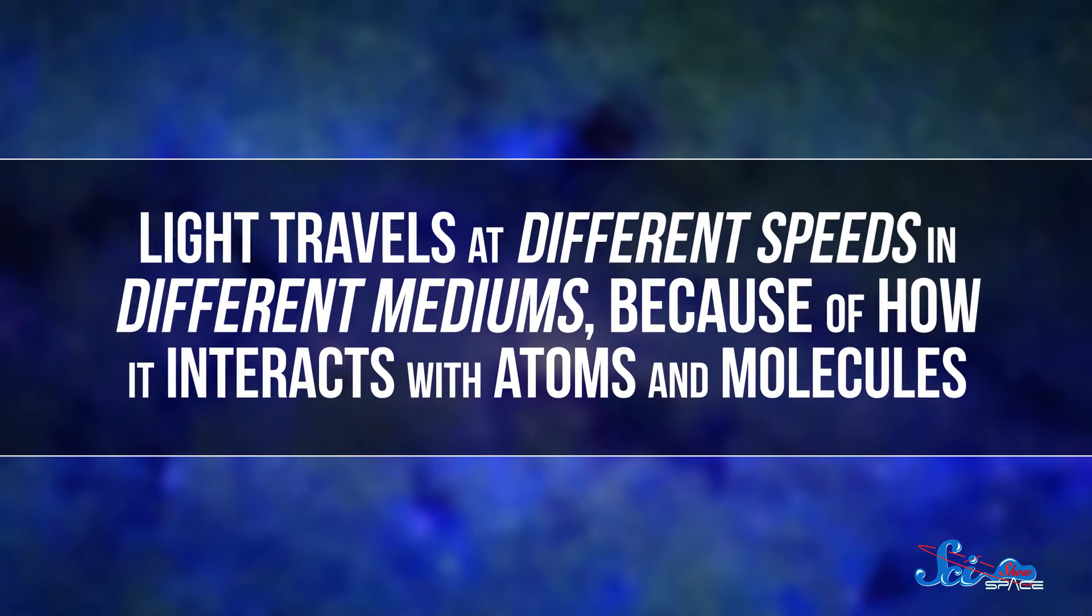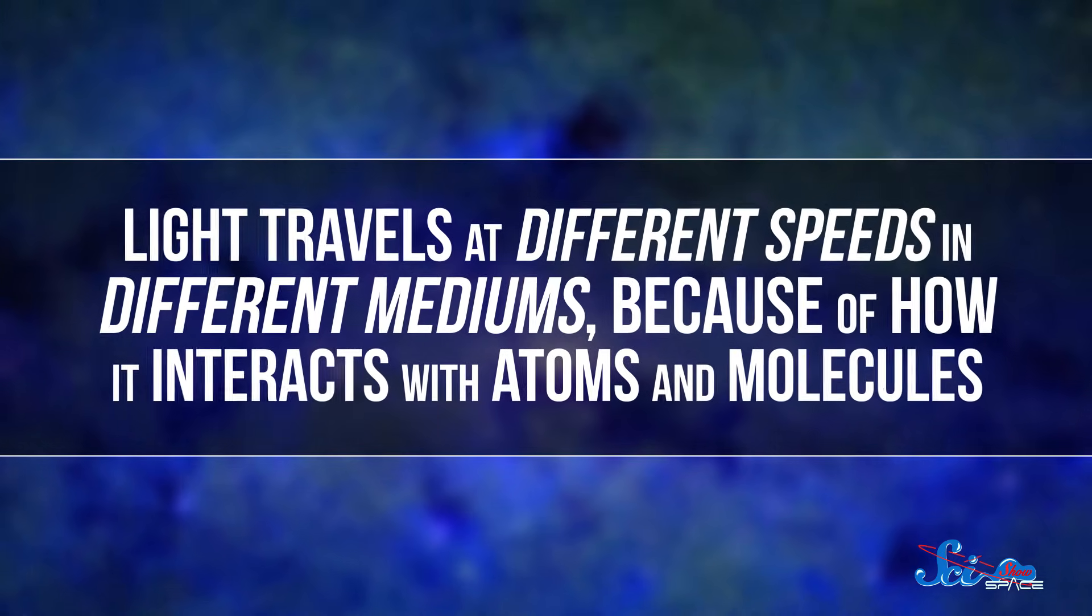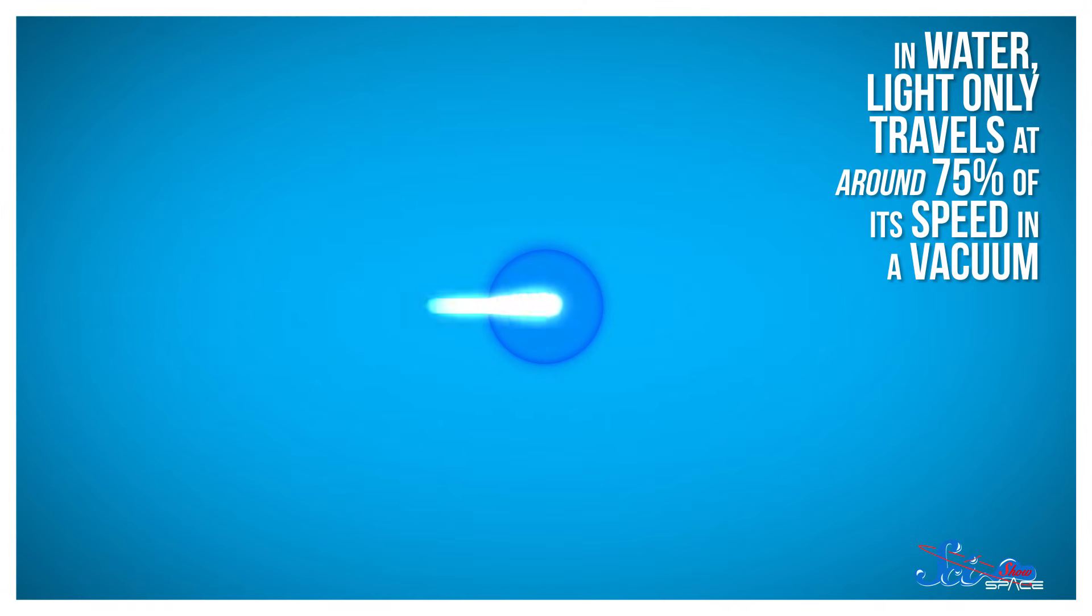Light travels at different speeds in different mediums because of how it interacts with atoms and molecules. And in water, light only travels at around 75% of its speed in a vacuum. This means that certain fast-moving particles can actually travel faster than light in water.